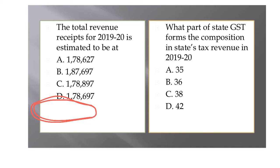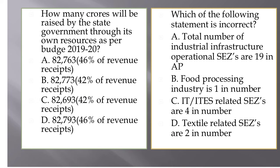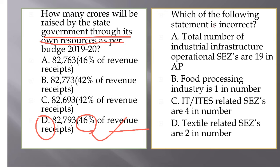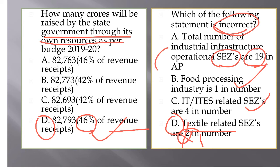The part of GST forming the state's tax revenue is 36%. This is represented in the pie chart in the socio-economic survey and budget documents. The answer to the next factual question is option D: 82,793 crores, which represents 46% of total revenue through own state budgetary resources. The next question asks which is incorrect: textile and apparels has only one SEZ, not two; food processing has only one; ITES-related SEZs are four in number; and operational SEZs are 19 in number. Total infrastructure projects being managed are 23 in Andhra Pradesh.